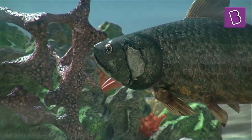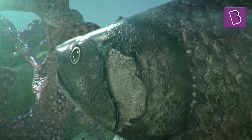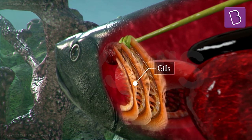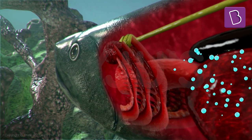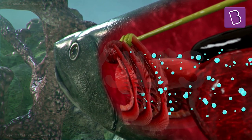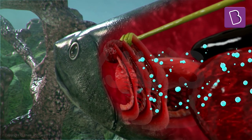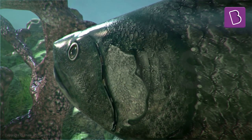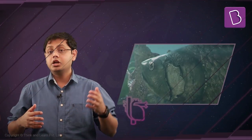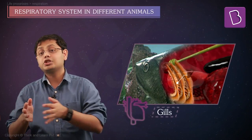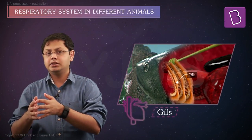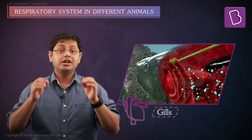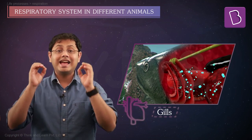Fishes possess gills which resemble fine-toothed combs, over which water is made to pass. Oxygen in the water exists in small quantities and is in its dissolved state. When the fish is moving, the water is made to pass over these gills and the oxygen, which is in its dissolved state, diffuses into the gills.